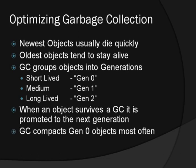The garbage collector compacts Gen 0 objects most frequently, as they are the most likely to need collecting. It collects Gen 2 as infrequently as possible. By focusing on objects most likely to need collecting, there is a significant performance gain over compacting the entire heap all the time.